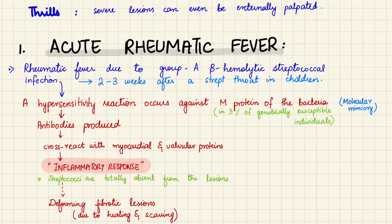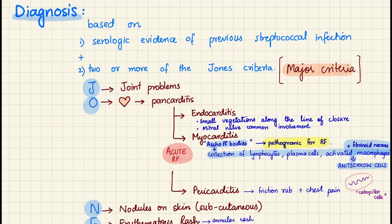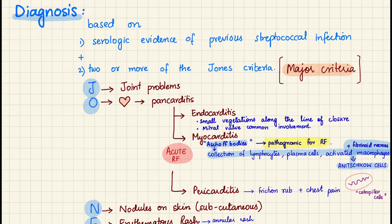This inflammatory response causes deforming fibrotic lesions due to healing and scarring of the valves. To diagnose acute rheumatic fever, we need serologic evidence of a previous streptococcal infection and two or more of the Jones criteria.